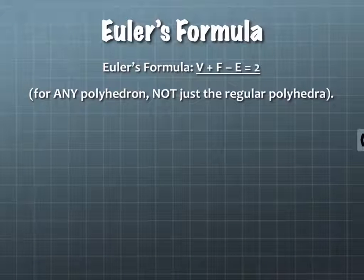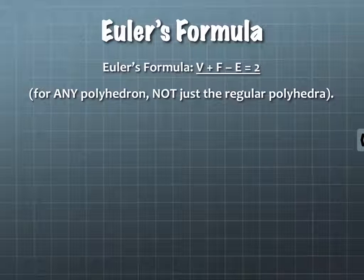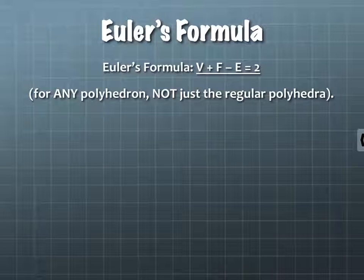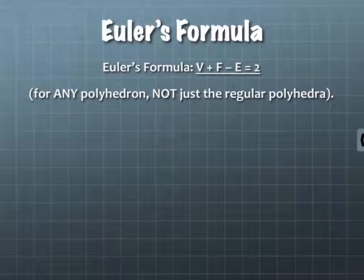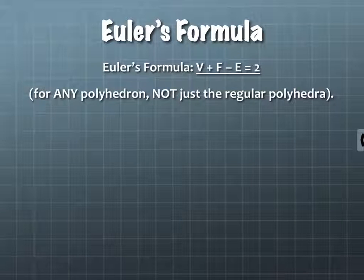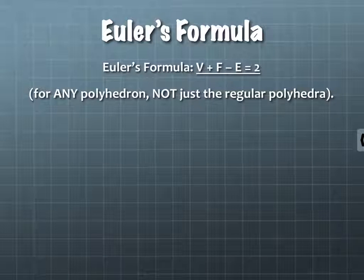Euler's formula is very interesting — you may have seen it before. This is pronounced 'Euler,' not 'Yooler' or anything like that. Euler's formula says that if you add vertices plus faces minus edges, it will always equal two. It doesn't just work for regular polyhedra — it works for any polyhedron: all our prisms and pyramids and the icosahedron and dodecahedron. It works for all of them.